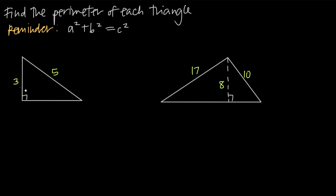So in this first example here, we have a right triangle. It includes a 90 degree angle that's been indicated here. We've been told that this left leg of the triangle is three units, that the length of the hypotenuse is five units, but this side here, this leg, is unknown.